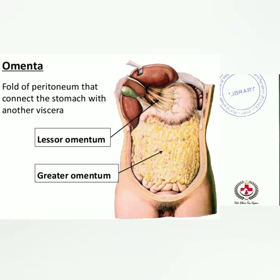Omentum: a double fold of peritoneum connecting the stomach to another visceral organ. The peritoneum is a mesothelium — a thin membrane lining the abdominal and pelvic cavity. The lesser omentum connects the lesser curvature of the stomach to the liver; the greater omentum connects the greater curvature of the stomach to the transverse colon.